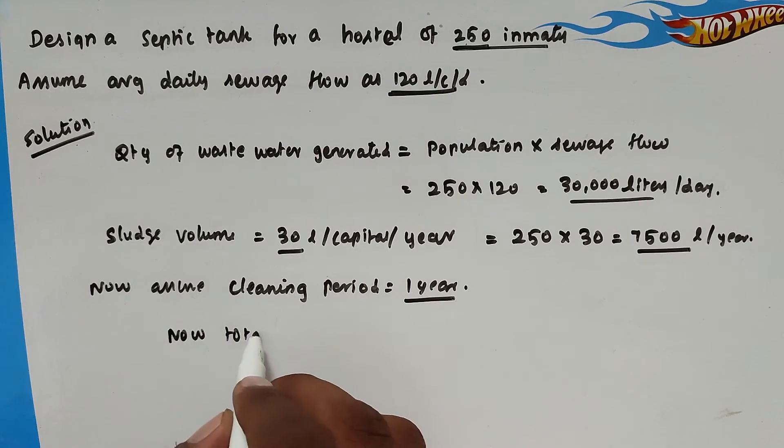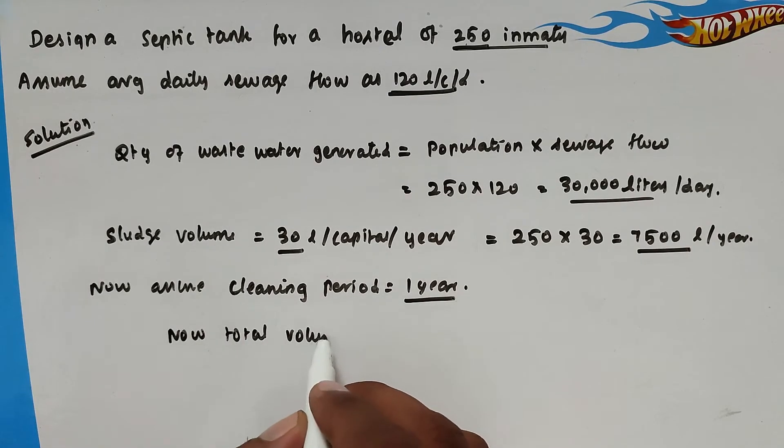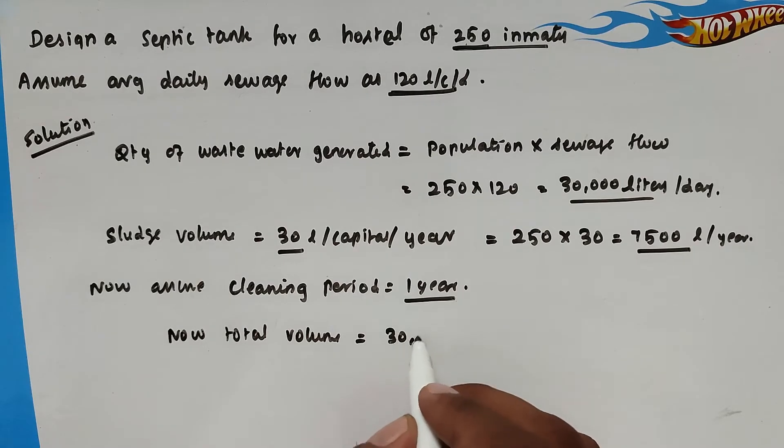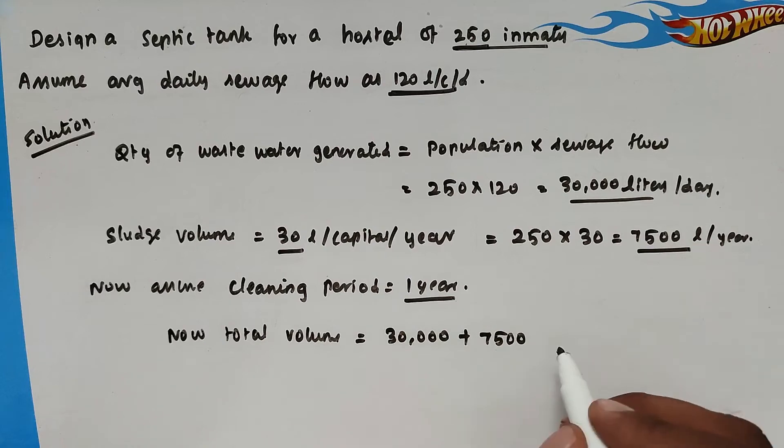Total volume equals 30,000 liters plus 7,500 liters. So now the total value will be 37,500 liters.